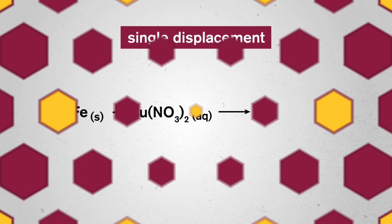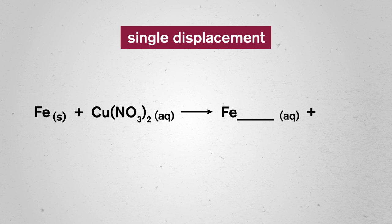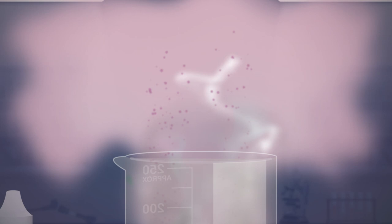For example, take iron reacting with copper nitrate. Let's follow step one and write it out, and use step two to recognize that A plus BC becomes AC plus B pattern, making it a single displacement reaction. That takes us to step three, predicting that iron will gain whatever copper nitrate loses, but now we need some more info. Let's get some help from TestTube.